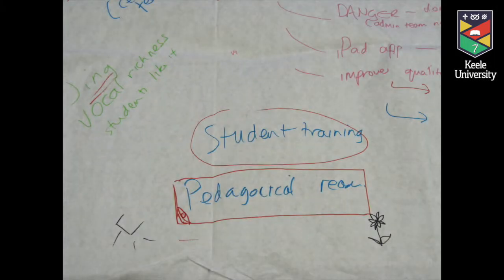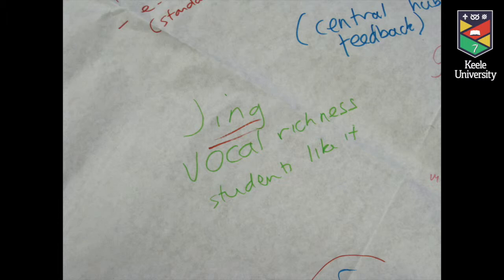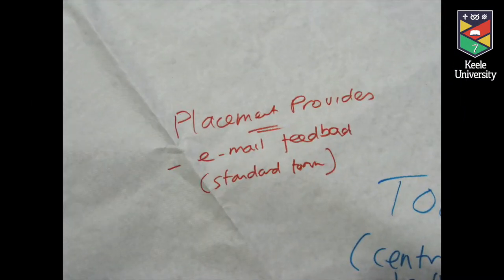On this table we were looking at electronic feedback — what's working for you, tips and tricks. The driver for this topic was the fact that the university has kind of unilaterally moved towards electronic feedback on almost all assessments now. So our discussions were around what types of electronic feedback we were already using and some of the pitfalls and benefits of these different types of feedback.